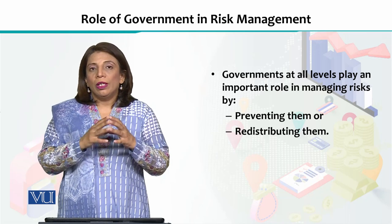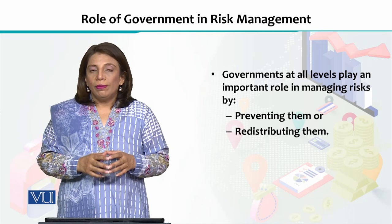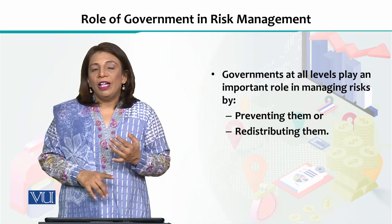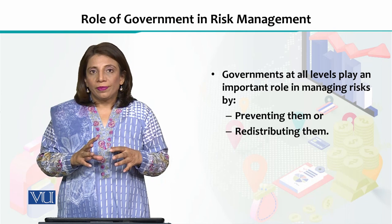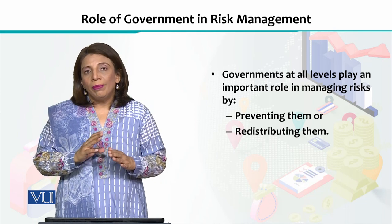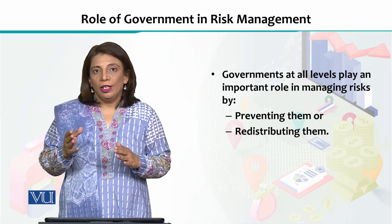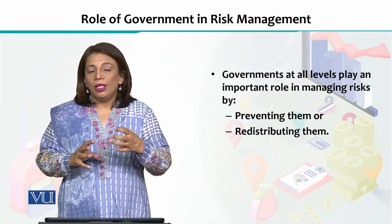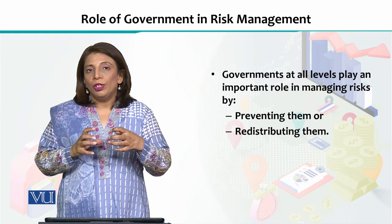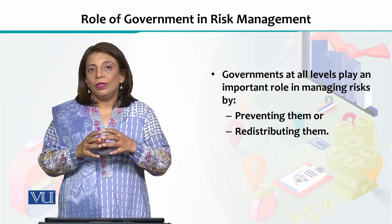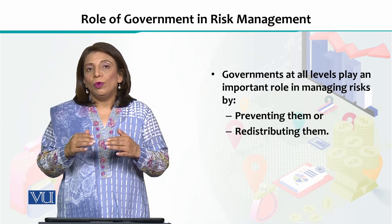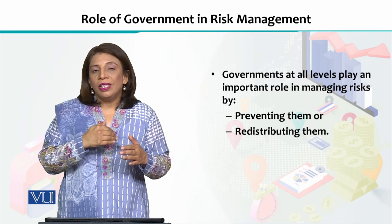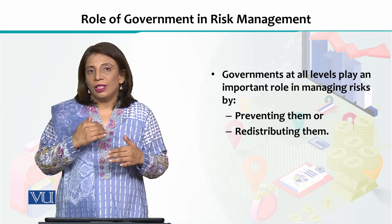If we look at the way governments work in any country, governments manage two types of risks. Number one, they try to prevent the risks. Number two, they try to redistribute the risks. If you are exposed to a certain thing, they try to distribute it and bring more people into the net so that you don't have a big damage. So the government prevents the risks for us and redistributes the risks for us.